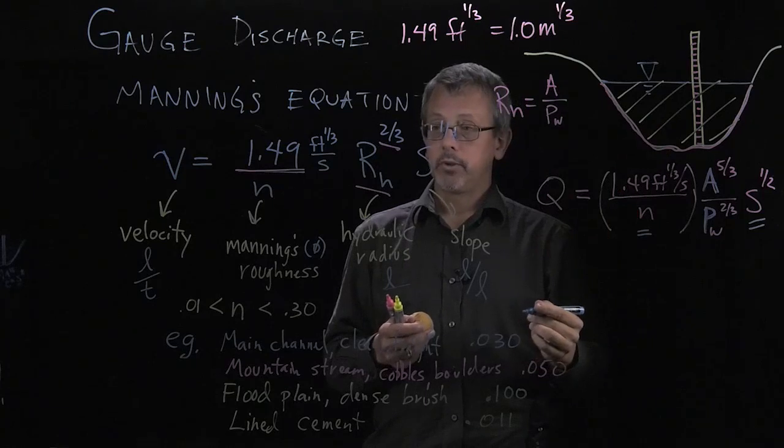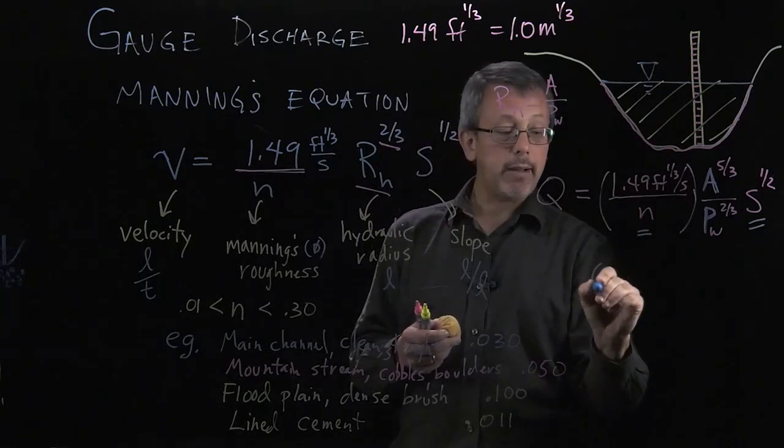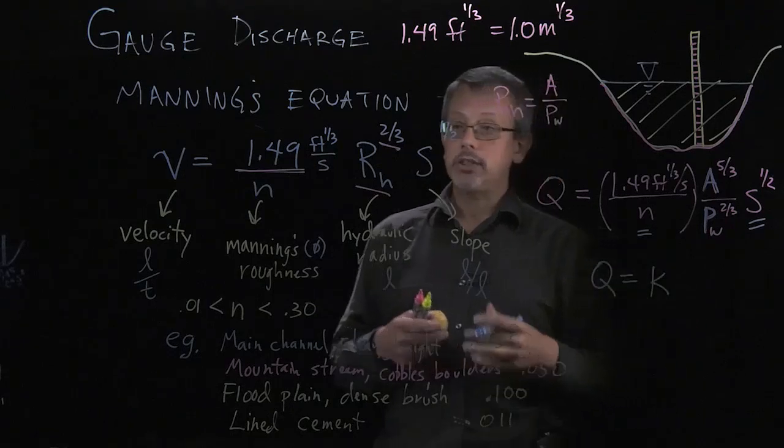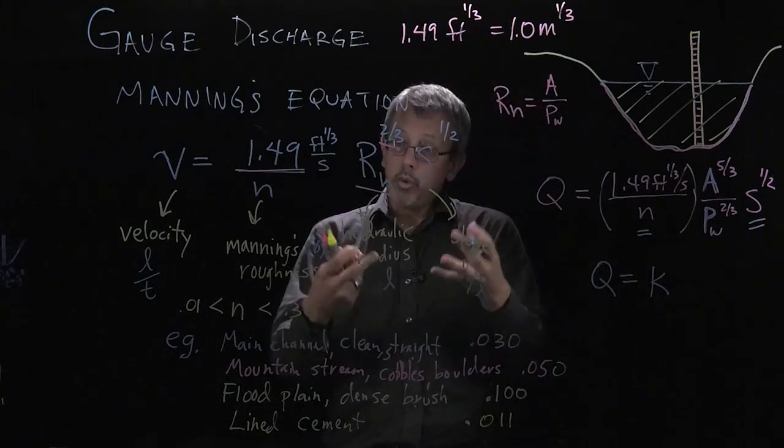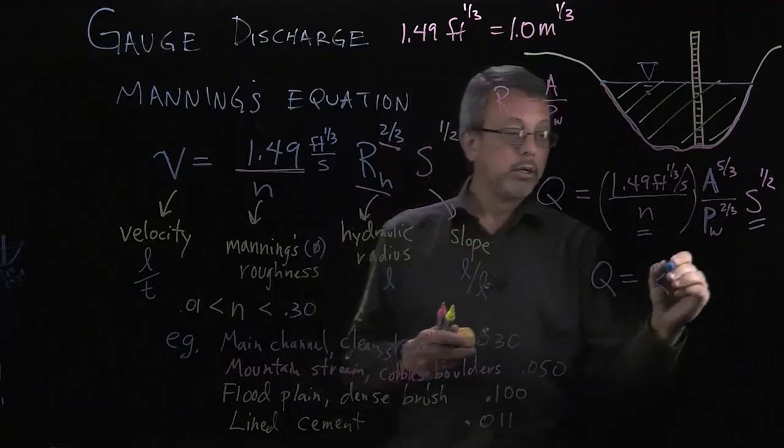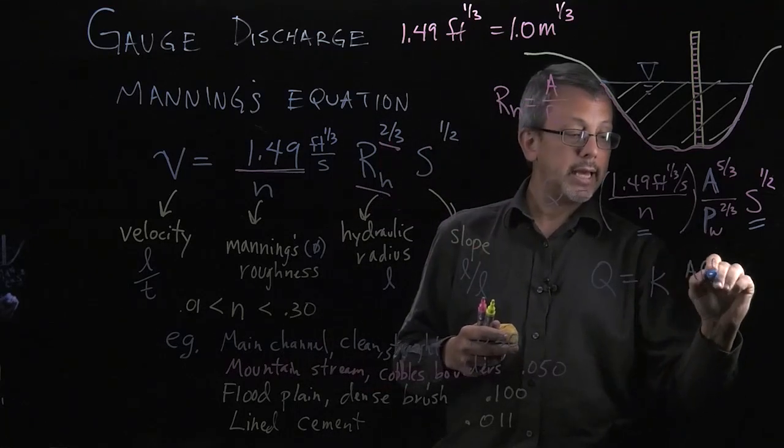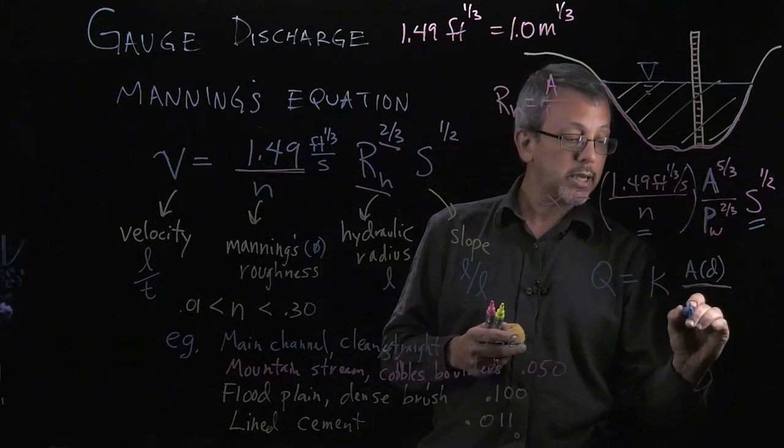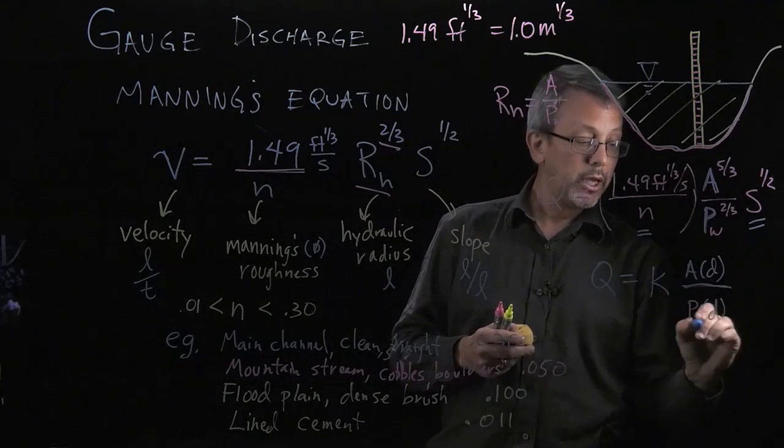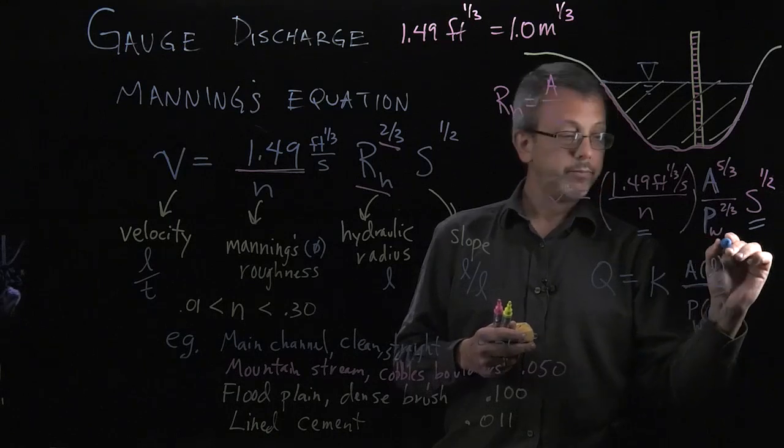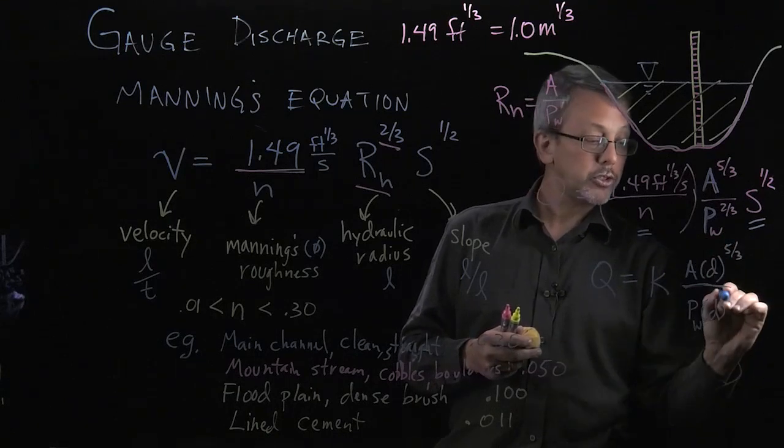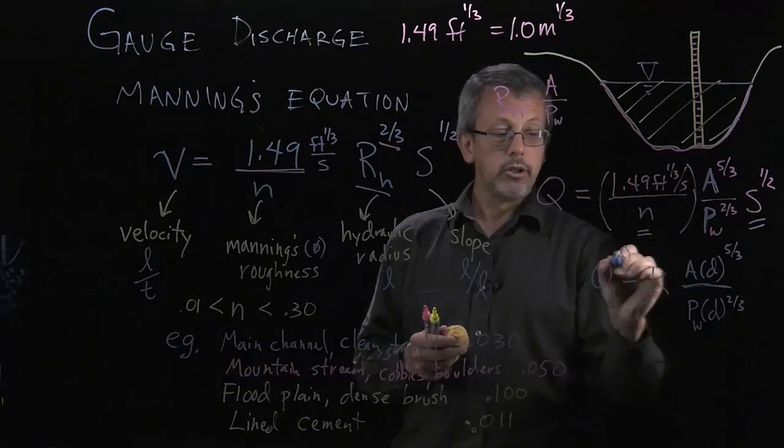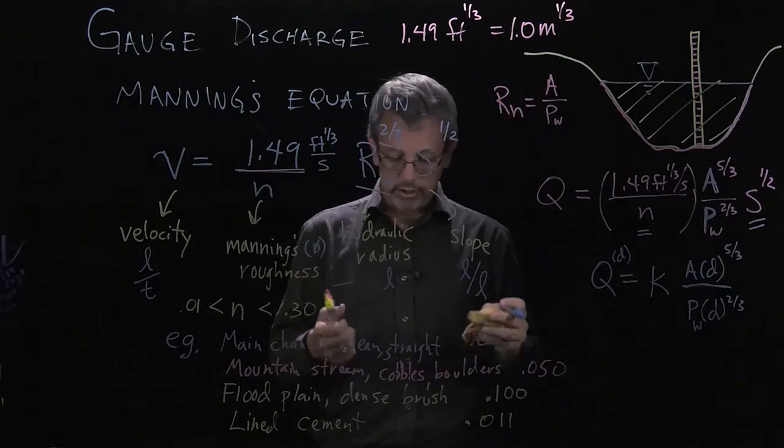And in fact, most places will have established the N and the S and have it in some constant value that's already applicable to that location. And then they can recognize that they have some function of the depth in the area and some function of the depth in the wetted perimeter, five-thirds and two-thirds. And they can use that to calculate the flow as some function of the depth.